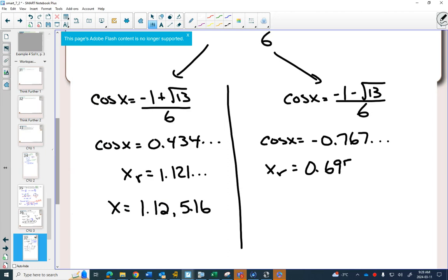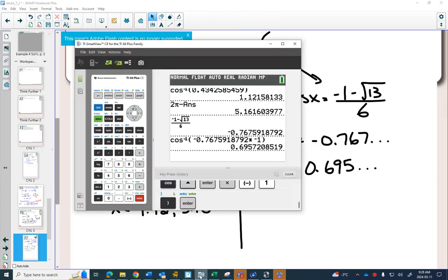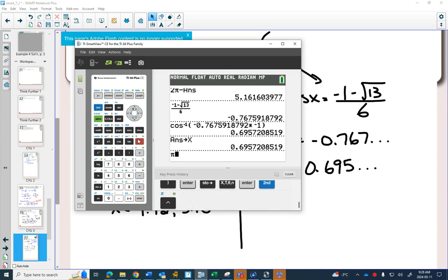And because it's negative, I'm going to need to find my answer in quadrants 2 and 3. So I'm going to store this as x. My answer in quadrant 2 will be π minus my reference angle: 2.45.